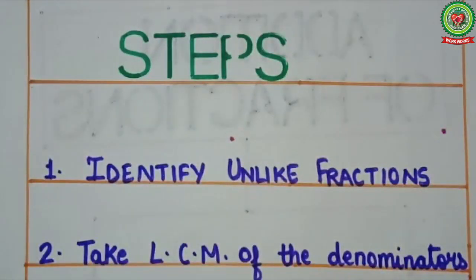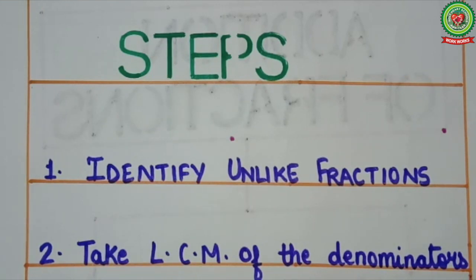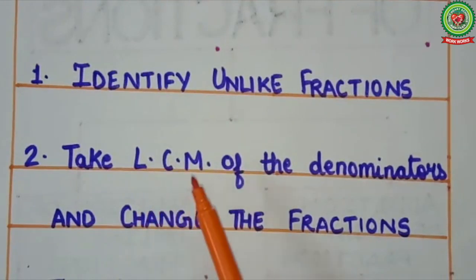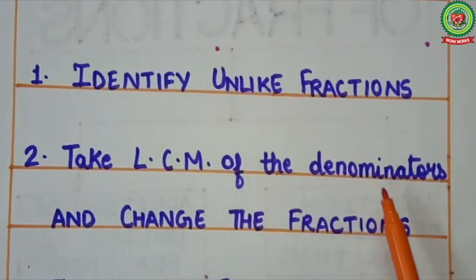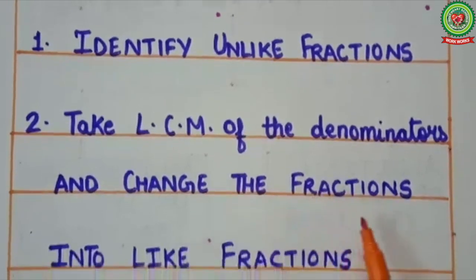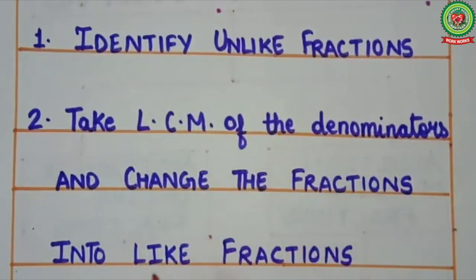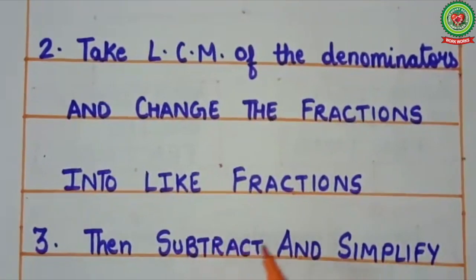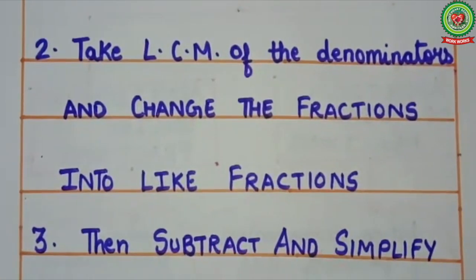Here are the steps. Step 1: Identify unlike fractions. Step 2: Take LCM of the denominators and change the fractions into like fractions. And the last step: subtract and simplify.